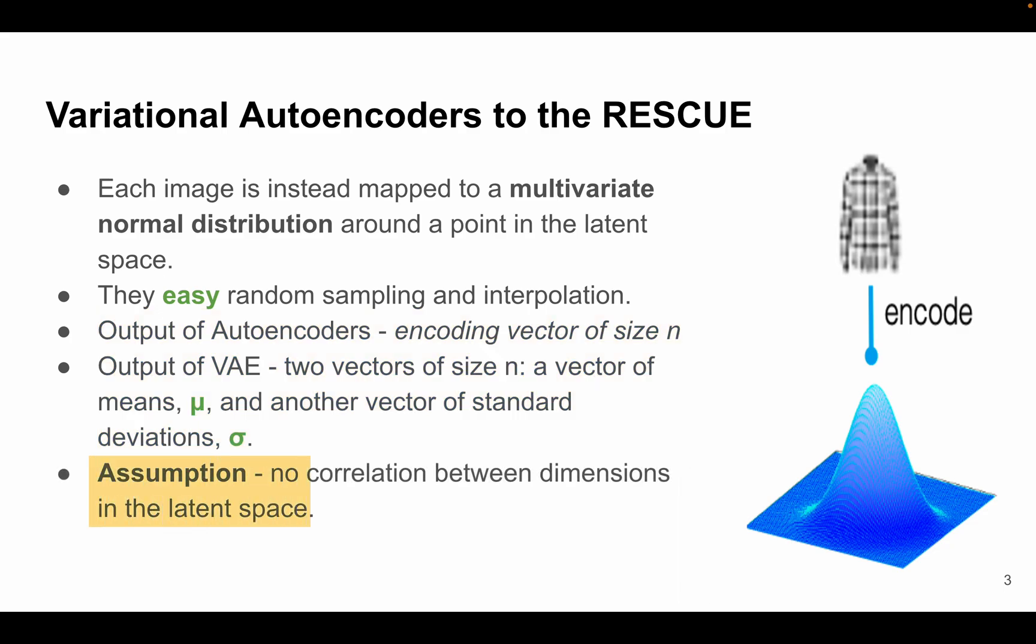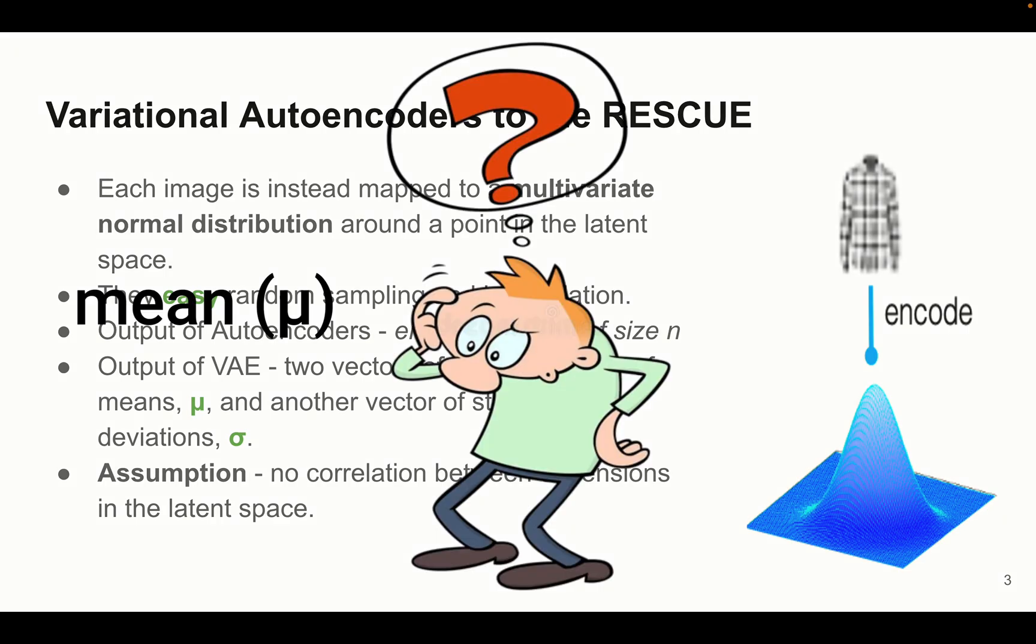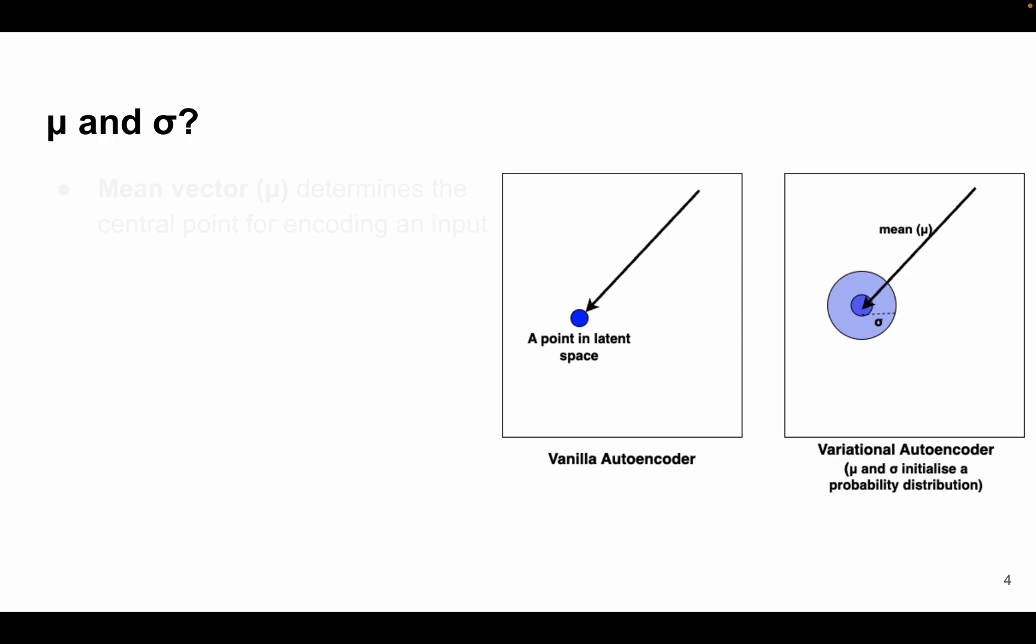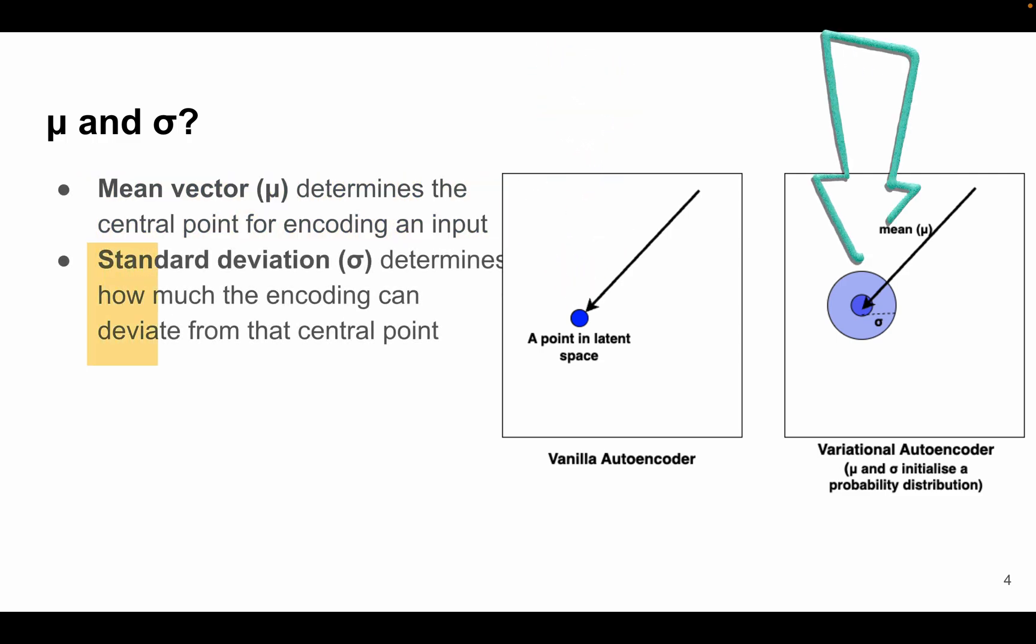Then the assumption is that variational autoencoders assume that there is no correlation between dimensions in the latent space. So this is all about the theoretical part of variational autoencoder. Now you might be confused like what is this mean and what is standard deviation, right? Let me simplify this mean vector and standard deviation for you all before moving ahead. In simple terms, the mean vector determines the central point for encoding an input, and standard deviation determines how much the encoding can deviate from that central point. We can see here in this particular diagram.